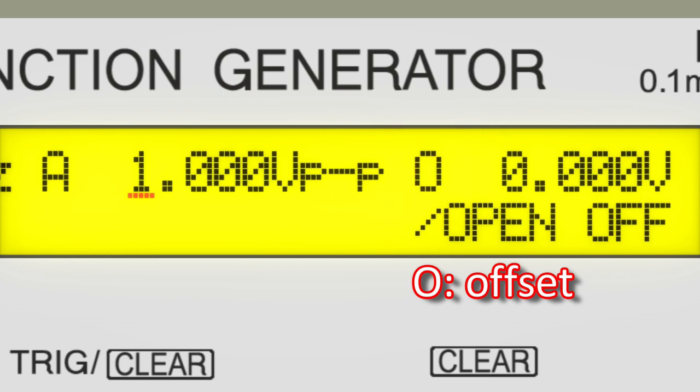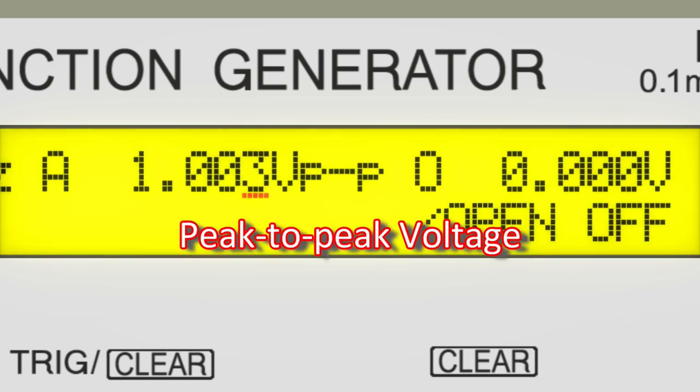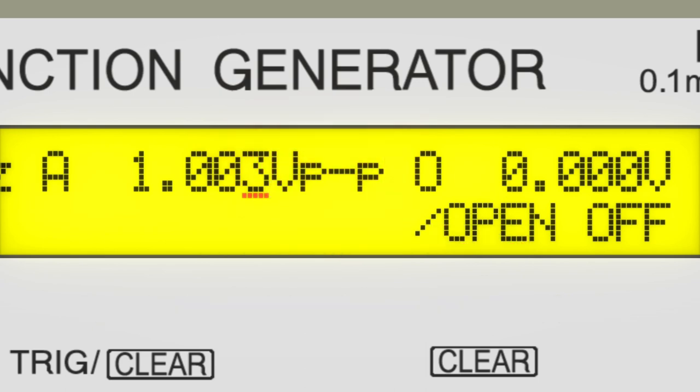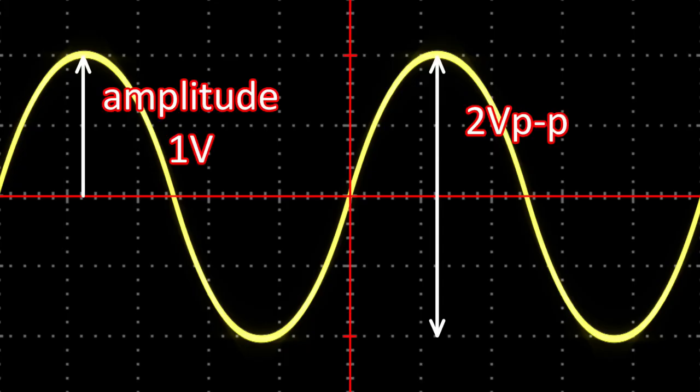As with frequency, use the arrow keys to move the cursor left and right, and use the Modify dial to move the value up or down. The unit VPP refers to peak-to-peak voltage, or the difference between the maximum and minimum values of a voltage waveform. Note that this is different from the amplitude used in natural science. 1 volt amplitude of sine wave AC corresponds to 2 volts peak-to-peak.